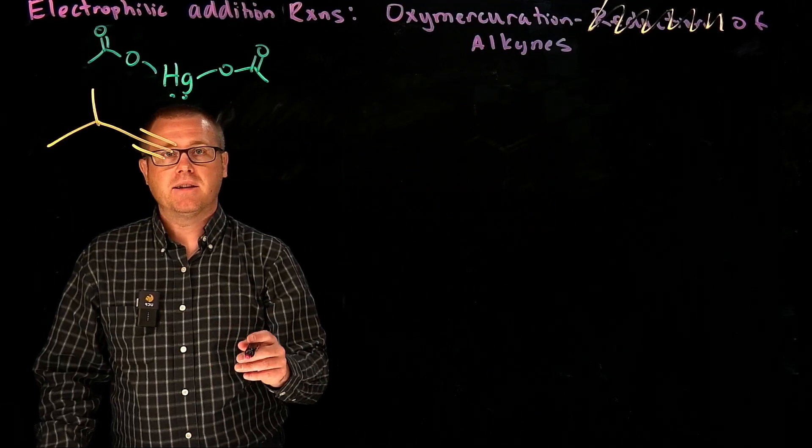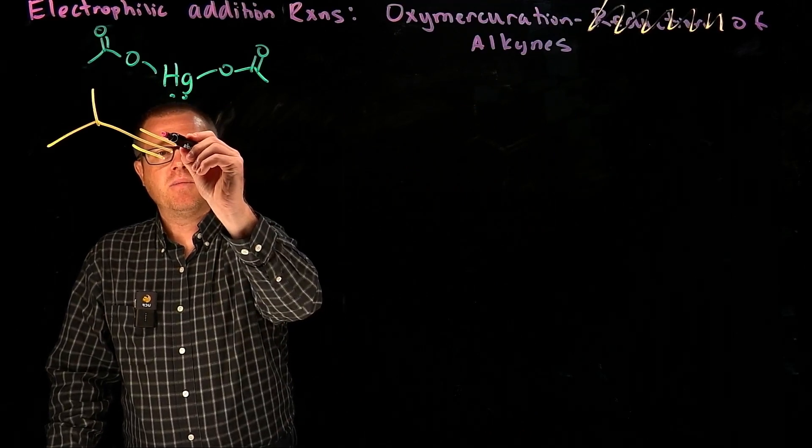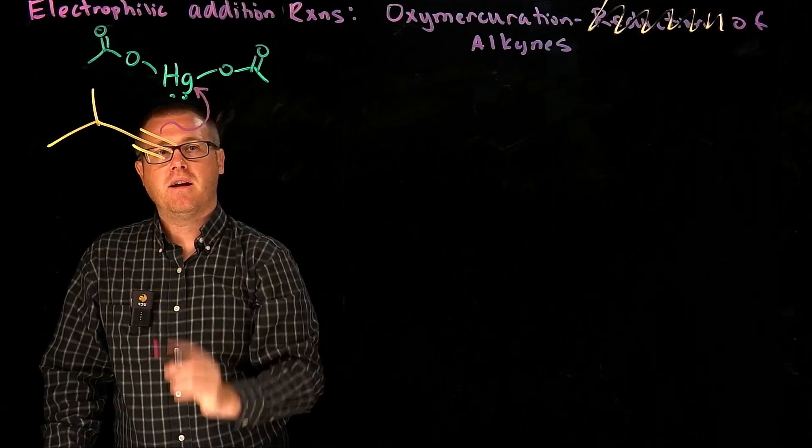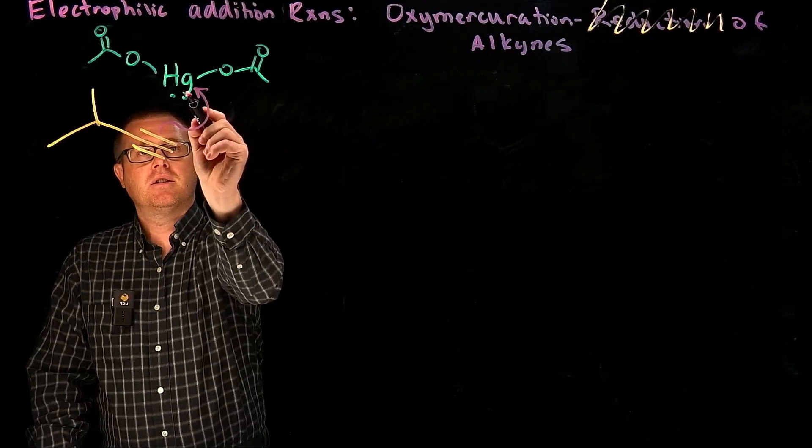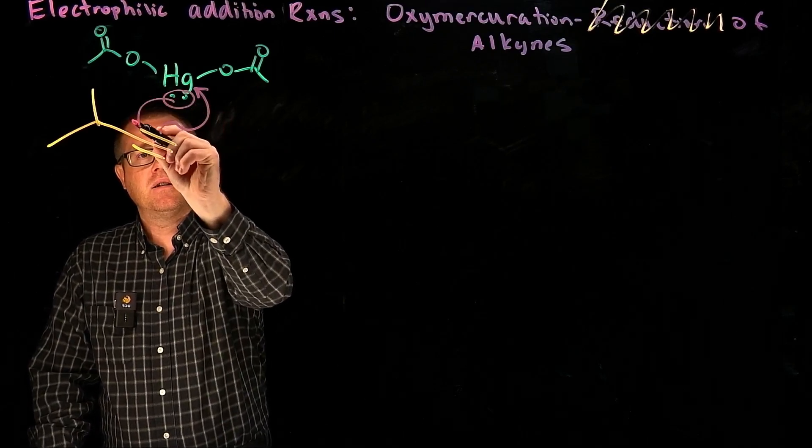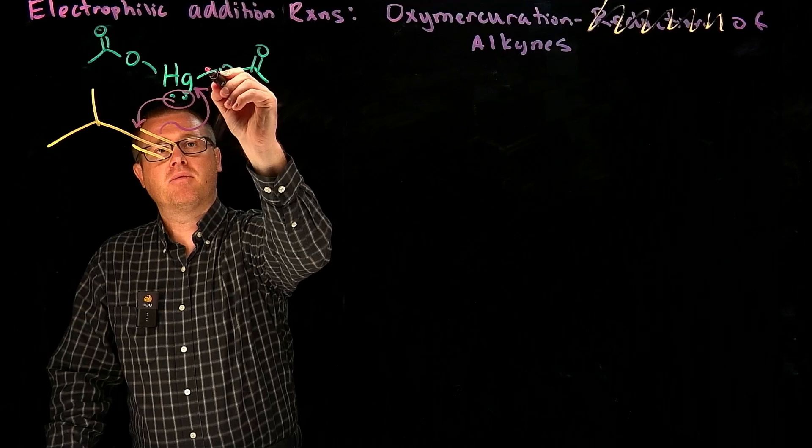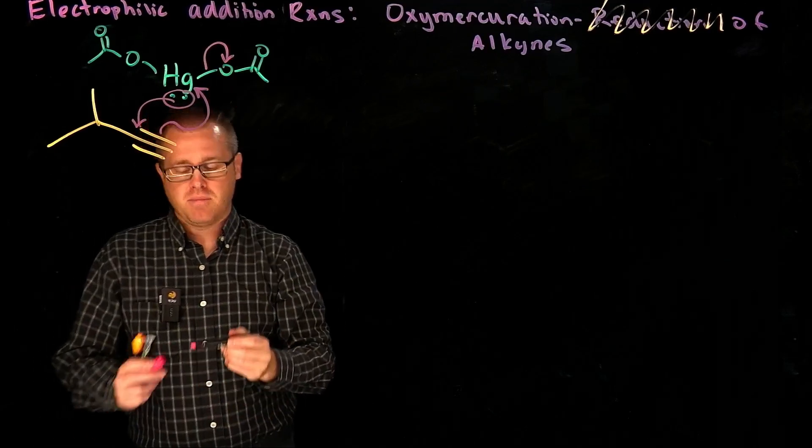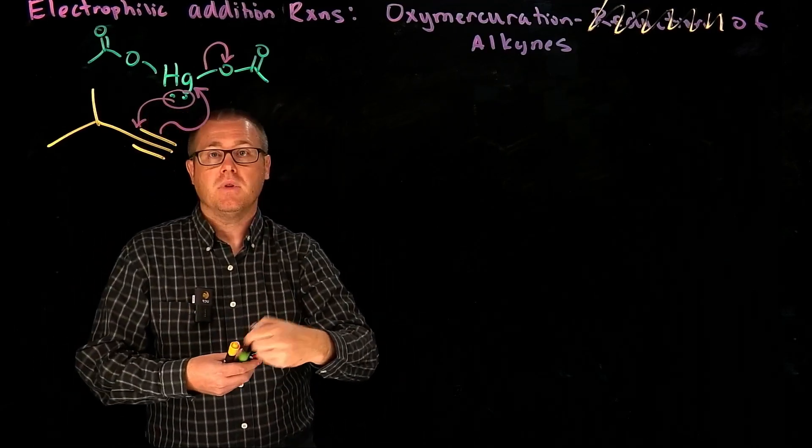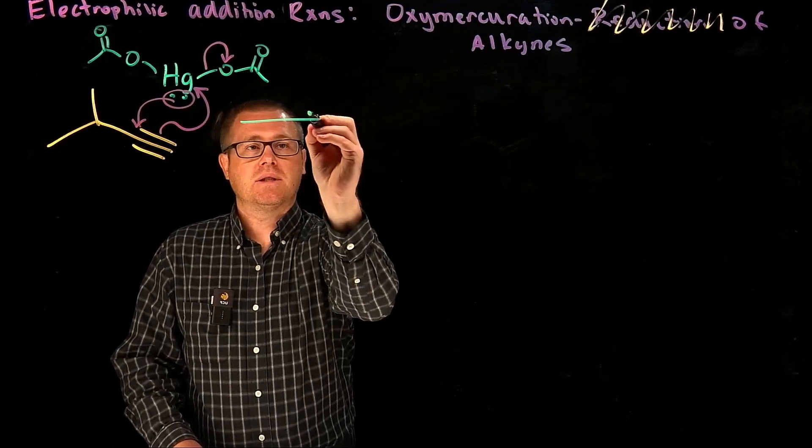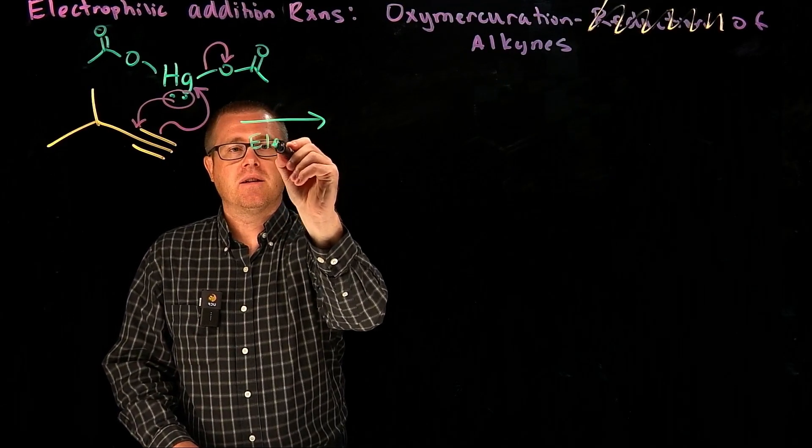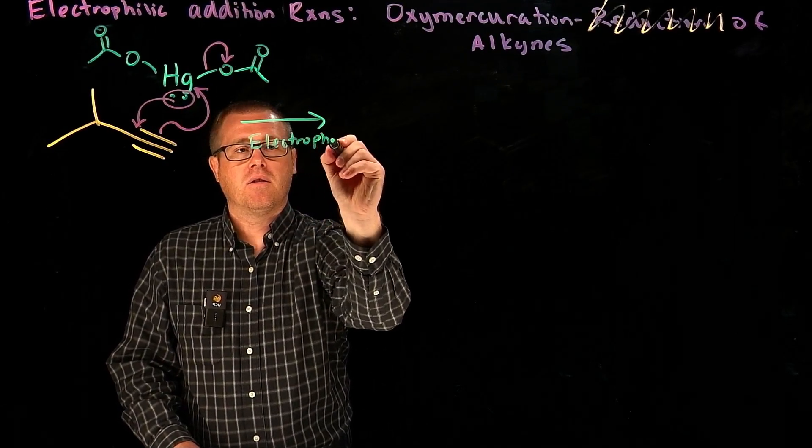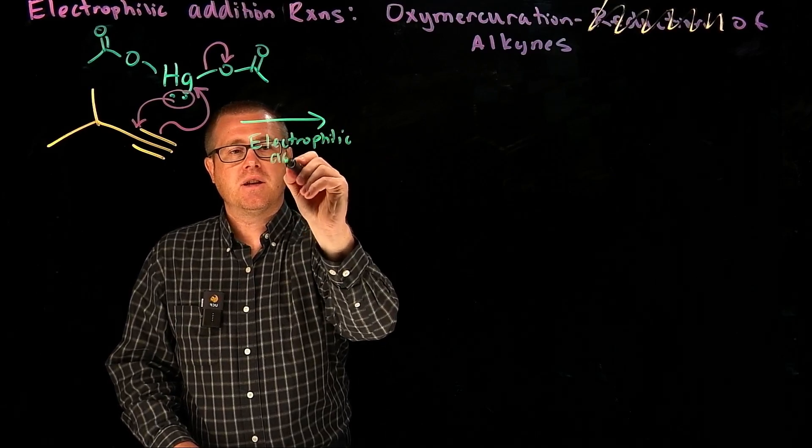So alkynes are electron-rich, so we'll use pi electrons there to attack the mercury. The lone pair is right there. Attack that, and then we'll break the mercury-oxygen bond like so. That's our electrophilic addition step.